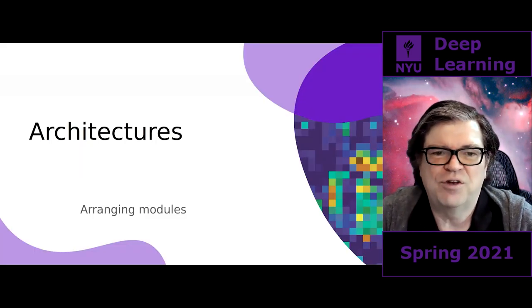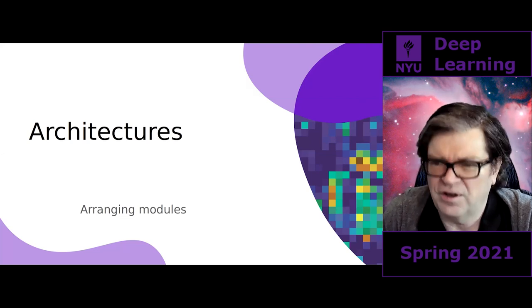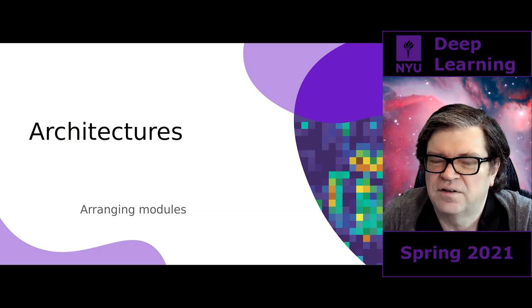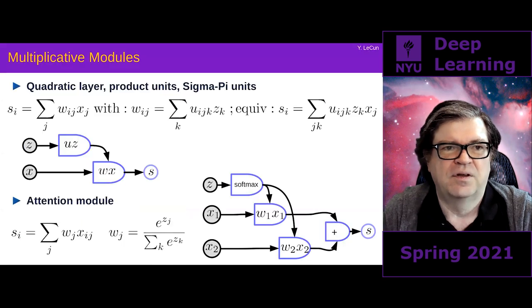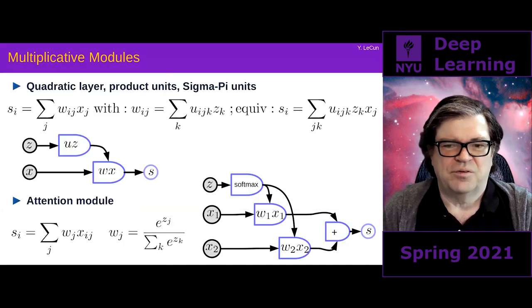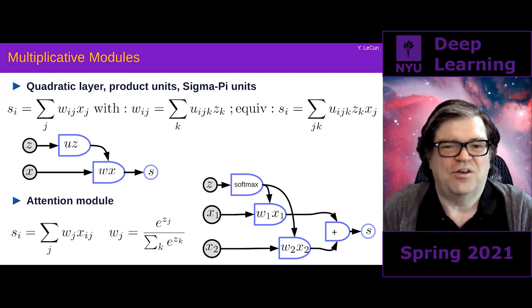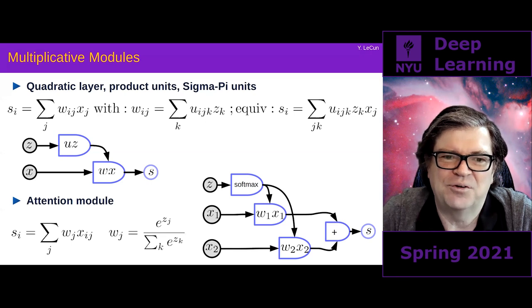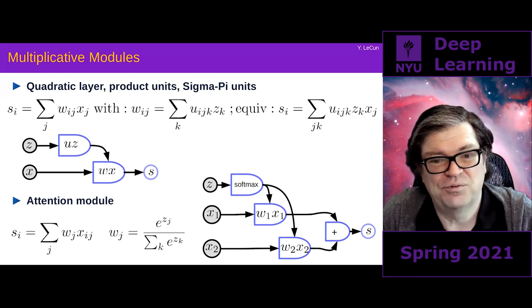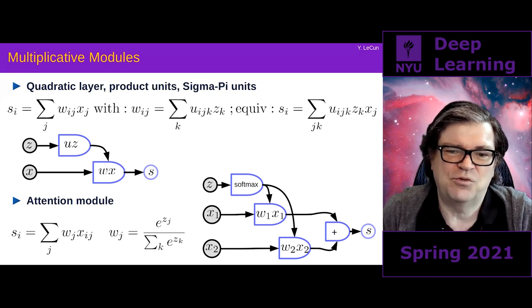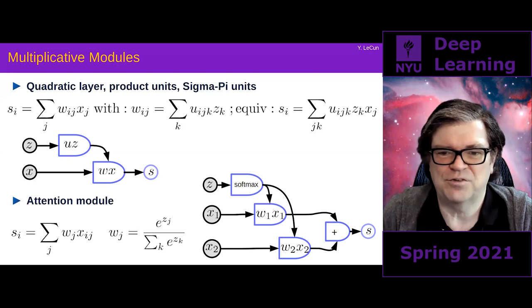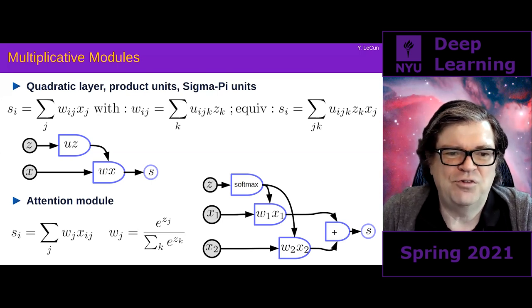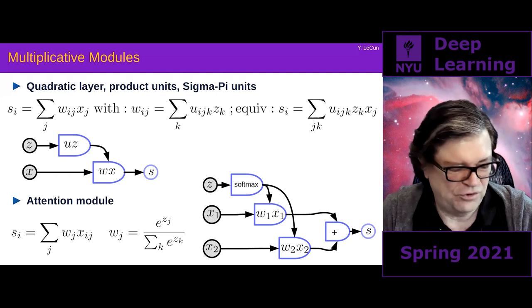Architectures are different ways of arranging modules to build neural nets. So far we've covered linear modules, pointwise nonlinearities, softmax, and cost functions including mean squared error and negative log-likelihood applied to softmax, which gives log-softmax.